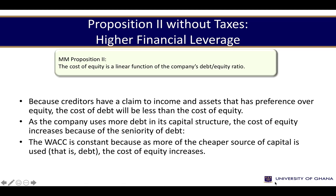Proposition 2 says that because creditors have a claim on income and assets and have preference over equity, the cost of debt will be less than the cost of equity, making it cheaper to use debt financing. However, as the company uses more debt in the capital structure, the cost of equity will rise because it becomes more risky to be an equity investor — debt is senior to equity in payment of any claims. What really happens is that the weighted average cost of capital remains constant: as more cheaper debt capital is used, the cost of equity increases, so there is no net change.